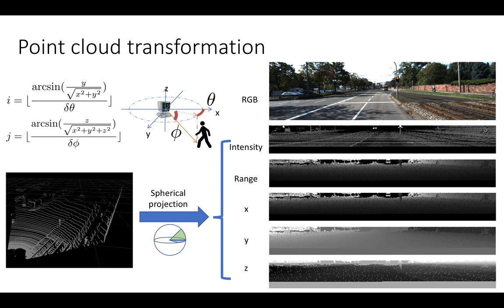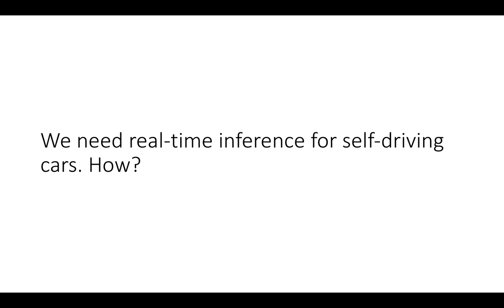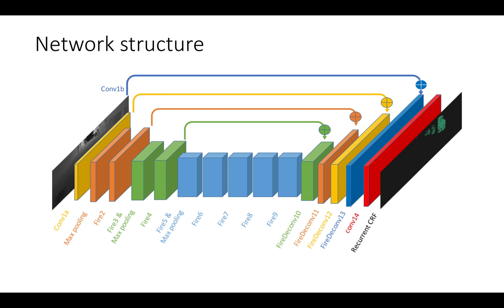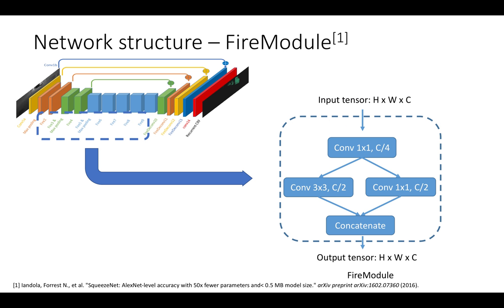We have our data, but now let's consider the neural network architecture. We need real-time inference, and to do that, we use a convolutional neural network with a few tricks. To downsample, we use the FIRE module, a combination of 1x1 and 3x3 filters.